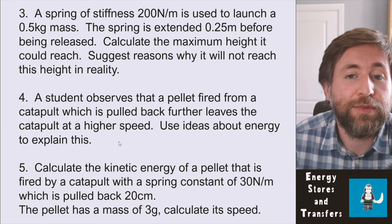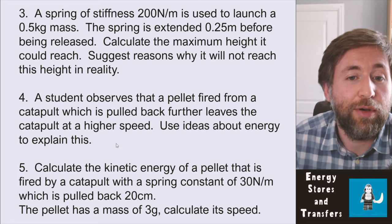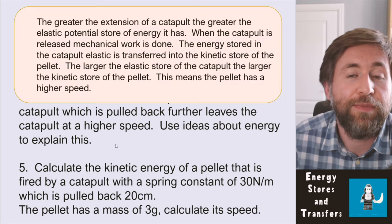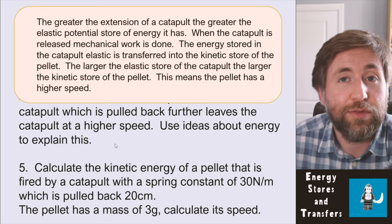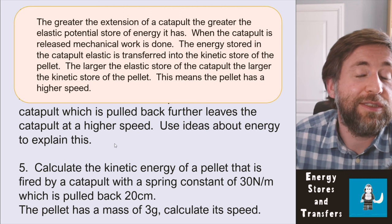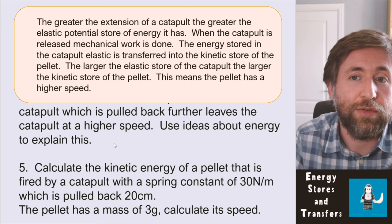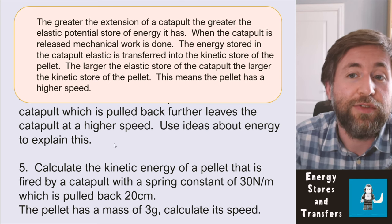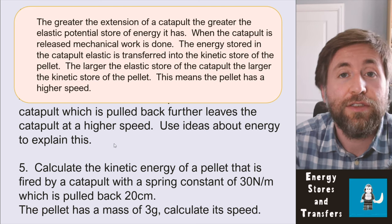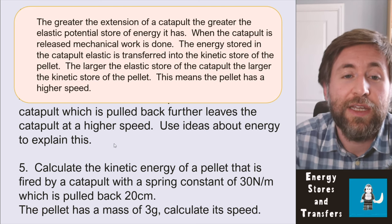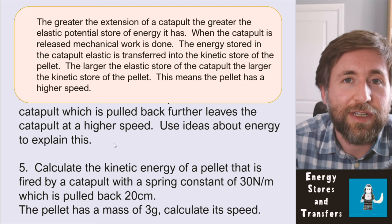Question: a student observes that a pellet fired from a catapult pulled back further leaves the catapult at a higher speed — use ideas about energy to explain this. The greater the extension of the catapult, the greater the elastic potential store of energy it has. When the catapult is released, mechanical work is done — the energy stored in the catapult is transferred into the kinetic store of the pellet. The larger the elastic store, the larger the kinetic store, and so the higher the speed.